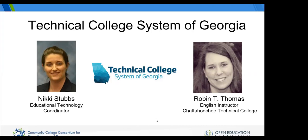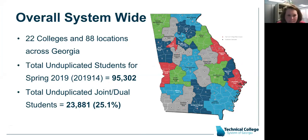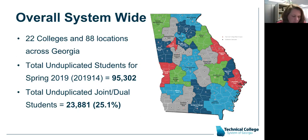Our overall system has 22 colleges — all individual colleges but all part of the Technical College System — with 88 locations throughout Georgia, covering north to south, east to west. Our total unduplicated students for spring is 95,302 for the system. Chattahoochee, where Robin teaches, is our largest college with about 9,500 students.